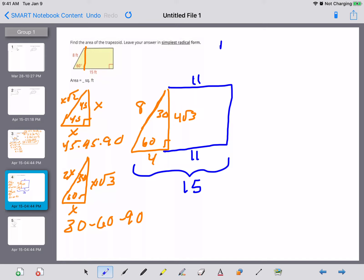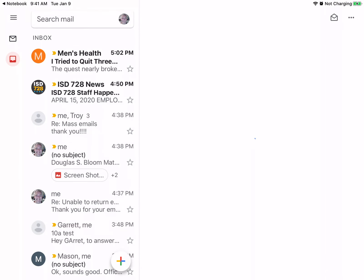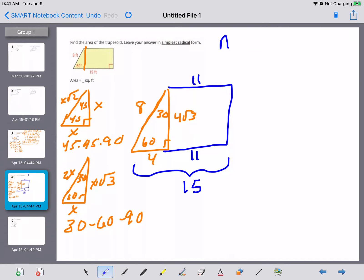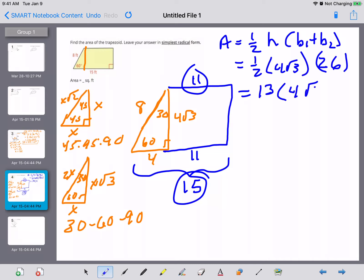I have my bases. My area is equal to one half times my height and my two bases. One half my height we found is 4 the square root of 3. Both bases added together 15 and 11 is 26. So now I've got 13 times 4 the square root of 3, that's 26 divided by 2, and I'm going to put that in my calculator.